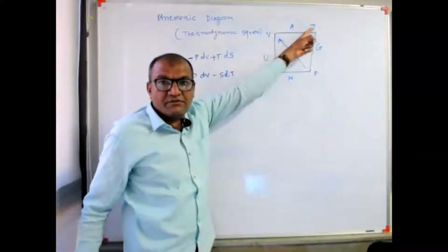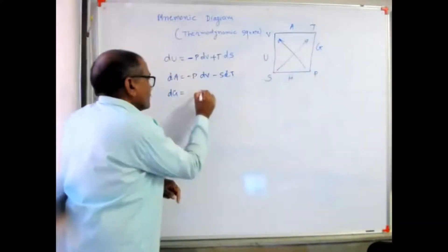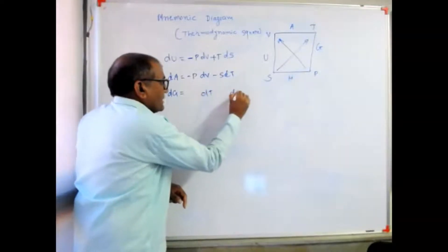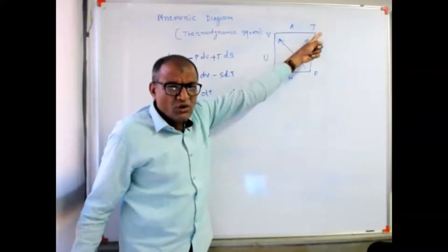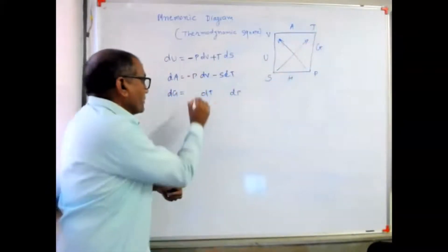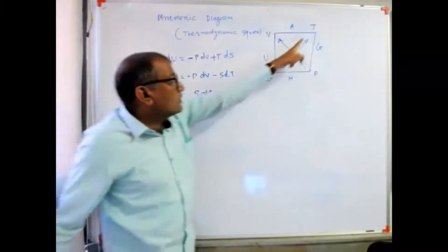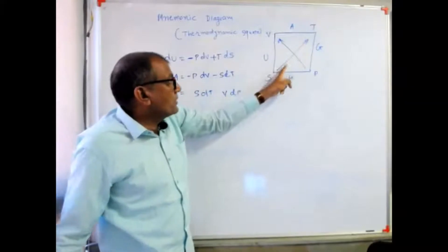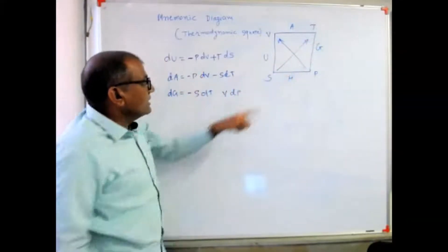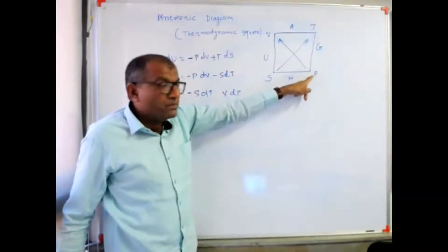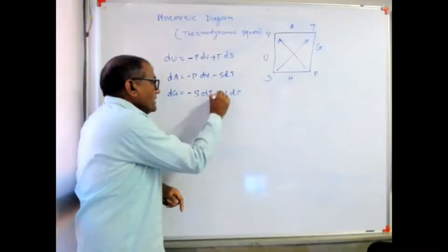If I write the equation for dG, the Gibbs free energy, there are two differential variables: temperature and pressure, dT and dP. The coefficients are: entropy S for the dT term, and volume V for the dP term. In the case of dT, the arrow is pointing towards the variable, so that term is negative. In the case of dP, the arrow is pointing away from P, so that term is positive.